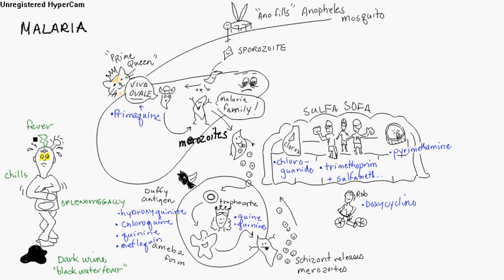What the patient's going to present with is fever, jaundice, headache, flu-like symptoms, chills, but they're going to have splenomegaly and what's called dark urine or blackwater fever. Complications could be acute renal failure, hemolytic anemia, and cerebral malaria, so you want to have this taken care of.